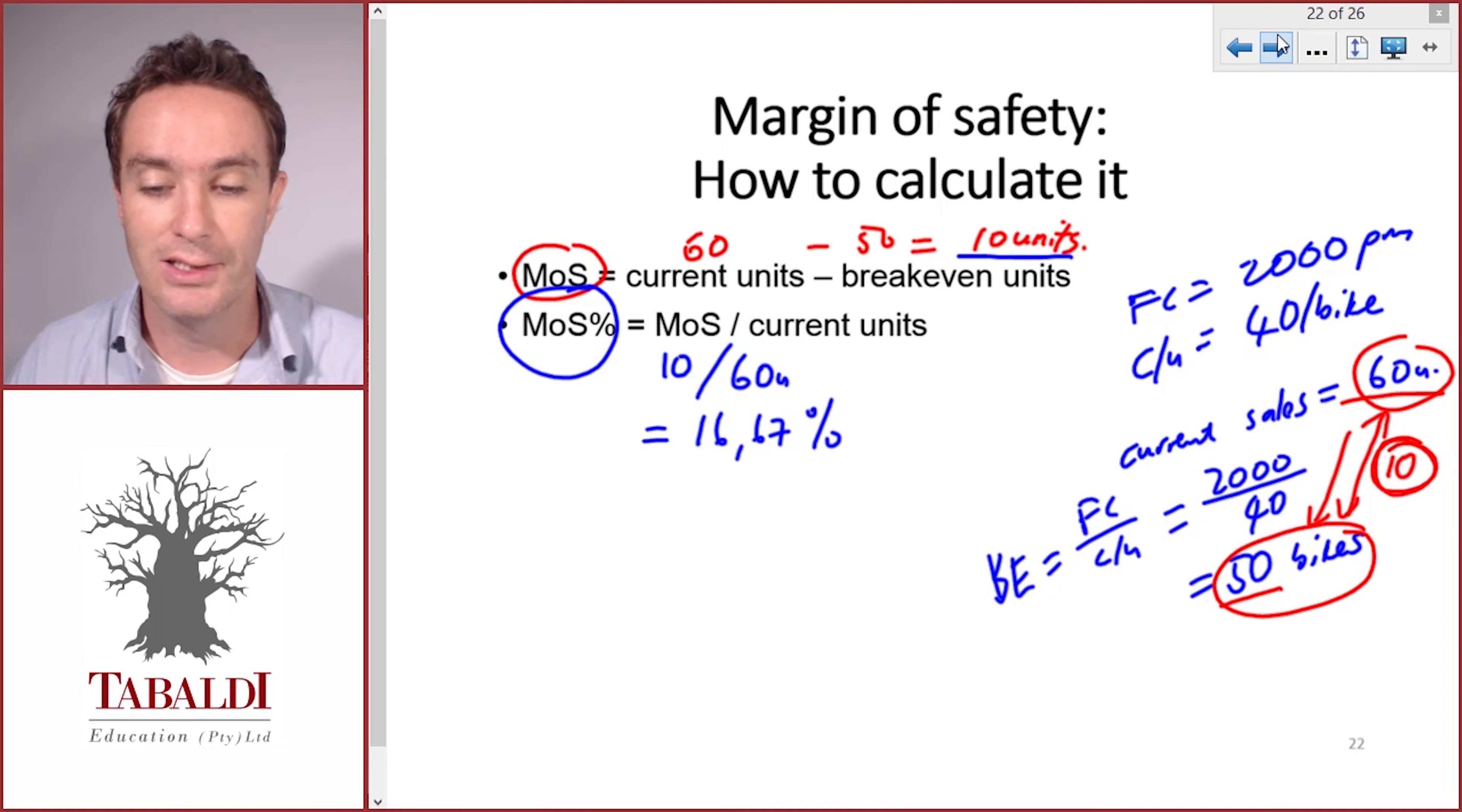How do we interpret this? The interpretation of our calculations is always the most important part. If we see a margin of safety of 16.67 percent, that means our current sales could drop by 16.67 percent before we start making a loss. This gives us an indication of how risky the current operations are and how likely we are to enter that loss-making position.